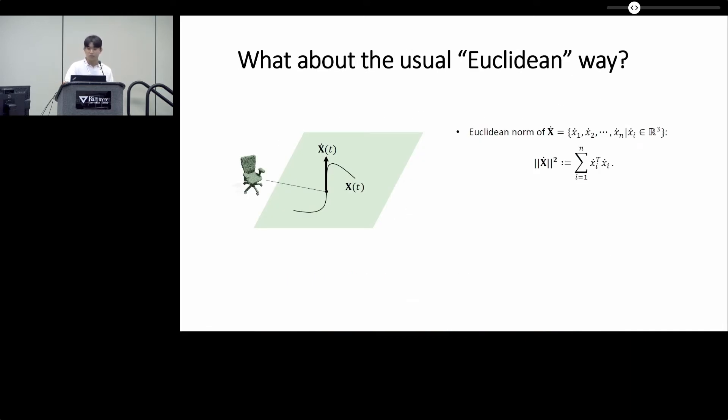What about the usual Euclidean way? Given a moving point cloud, bold x of t, with the velocity x dot, one naive way would be to sum over all the pointwise Euclidean norms. In the matrix representation large x, the Euclidean norm can be written as x dot transpose x dot.